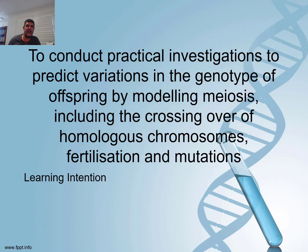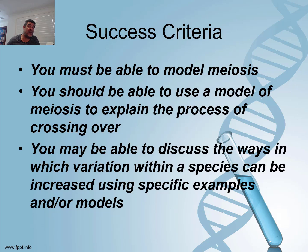Before we do that, we need to cross into one area that focuses on the idea of variation. This being a modelling process is something that you will do in class and has been part of your depth study. In this video we're focusing on sources of variation. By the end of this video you should be able to model meiosis, use a model of meiosis to explain crossing over, and discuss the ways in which variation within a species can be increased. I'm going to concentrate on two-dimensional models that you see on the screen.